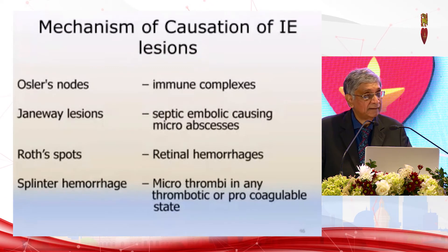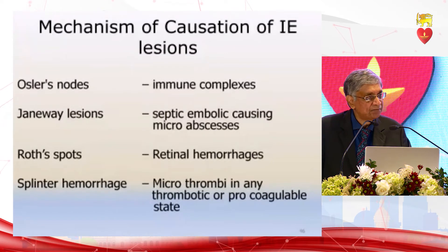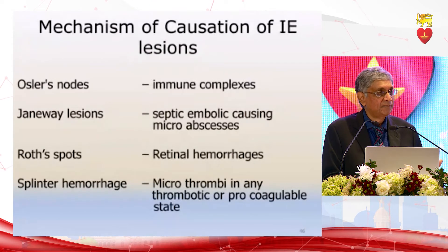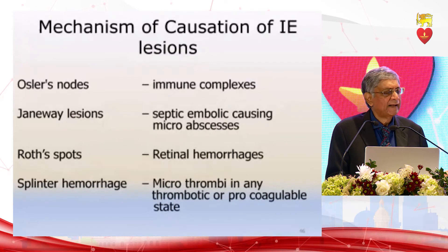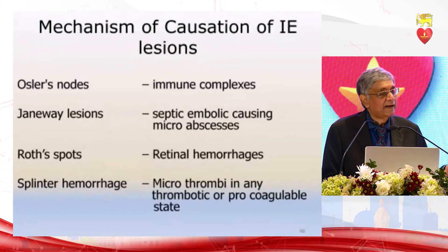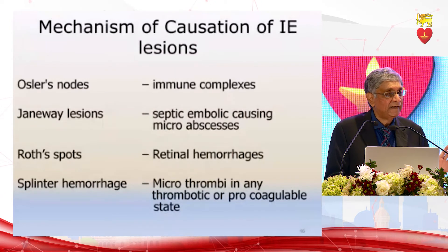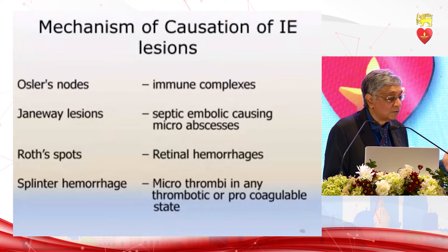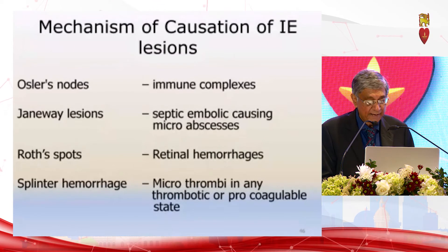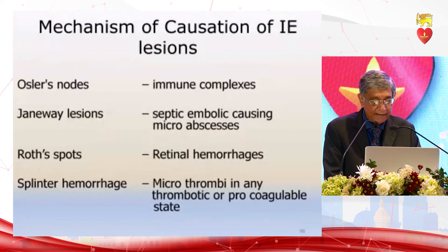The pathophysiological basis of these physical signs is explained as follows: if you have left-sided endocarditis, micro-septic embolization can occur systemically. But if the lesions are due to immune complexes, even right-sided endocarditis can cause Osler's nodes. However, Janeway lesions do not occur with right-sided endocarditis because septic emboli cannot reach the systemic circulation. This is an interesting and important distinction to keep in mind.